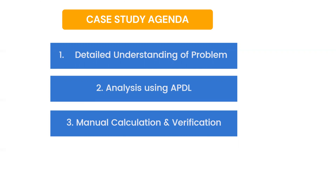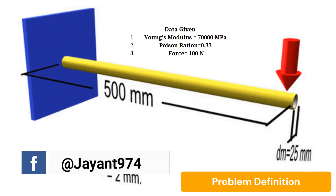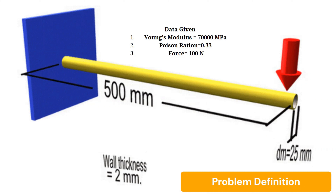Our problem involves a cantilever beam having a pipe-shaped structure with a diameter of 25 mm and a wall thickness of 2 mm. The given data for this problem is: Young's modulus = 70,000 MPa, Poisson's ratio = 0.33, and a force of 100 Newton applied downwards on the pipe.